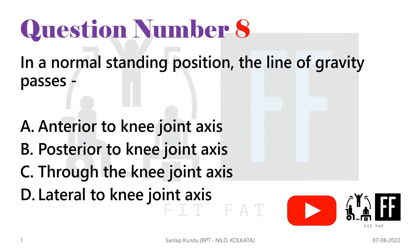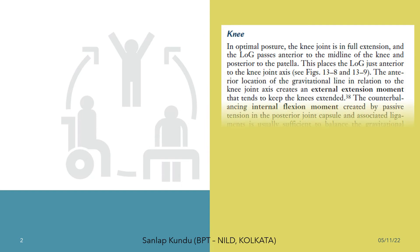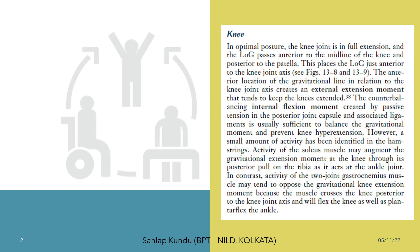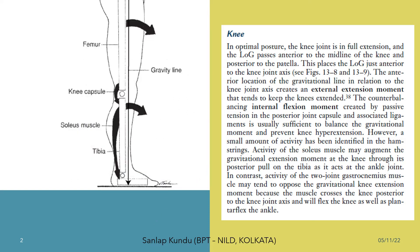To know the answer, we have to find out the location of the line of gravity with respect to the knee. Now, if you see the biomechanics book, you can see right here it is clearly stated that in optimal posture, the knee joint is in full extension and the line of gravity passes anterior to the midline of the knee and posterior to the patella.